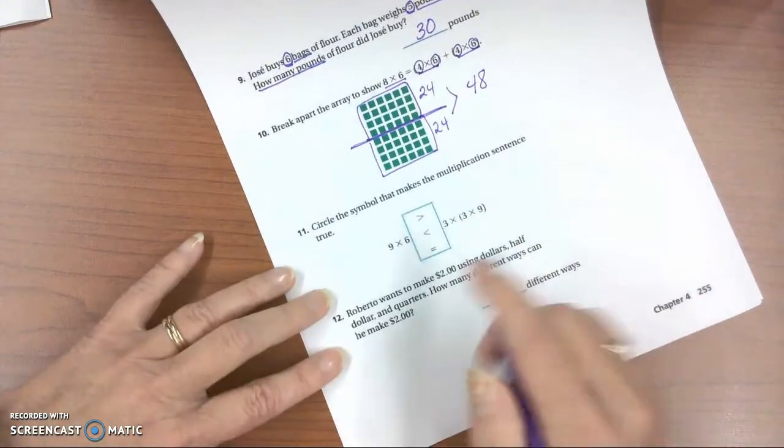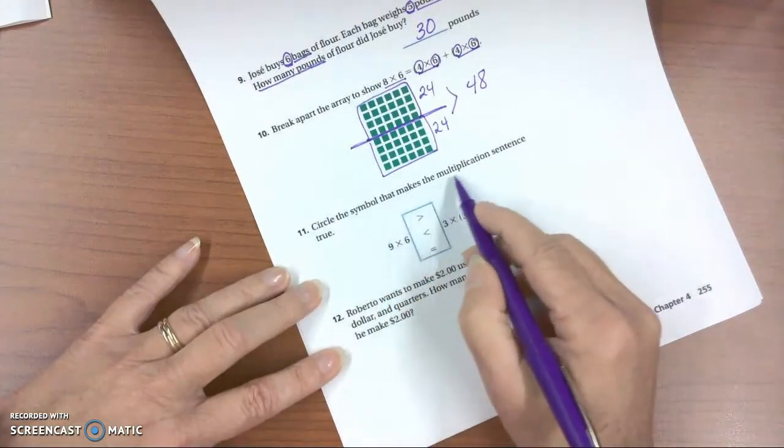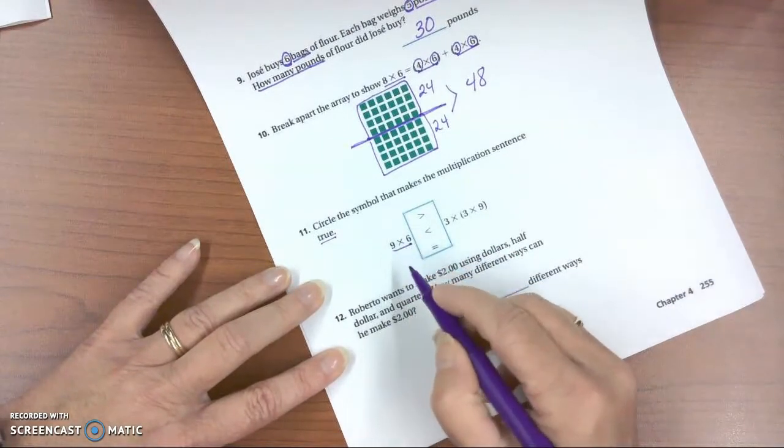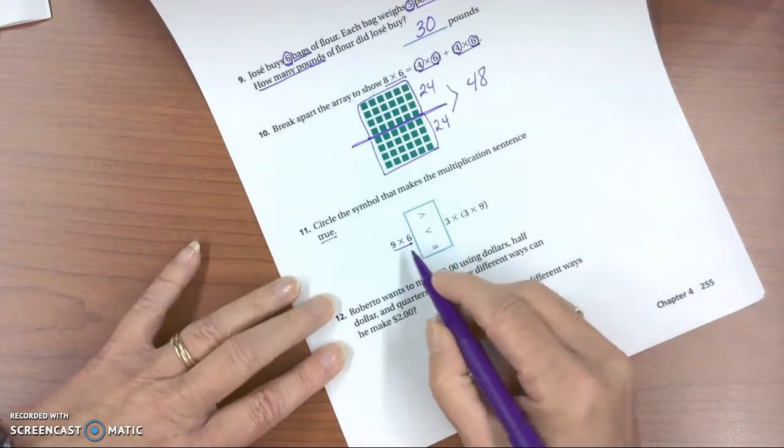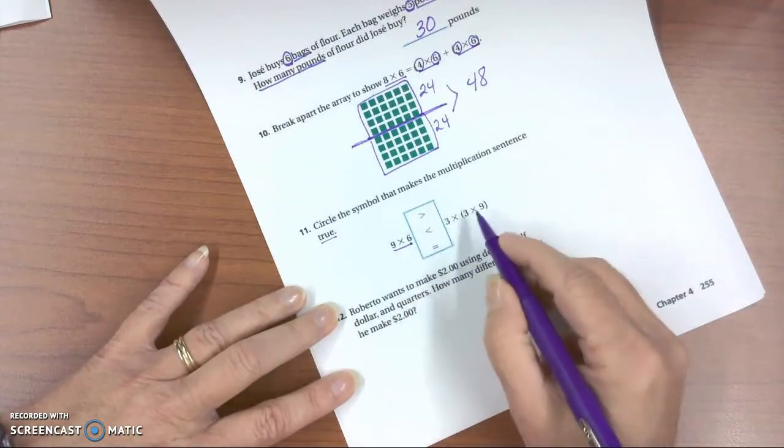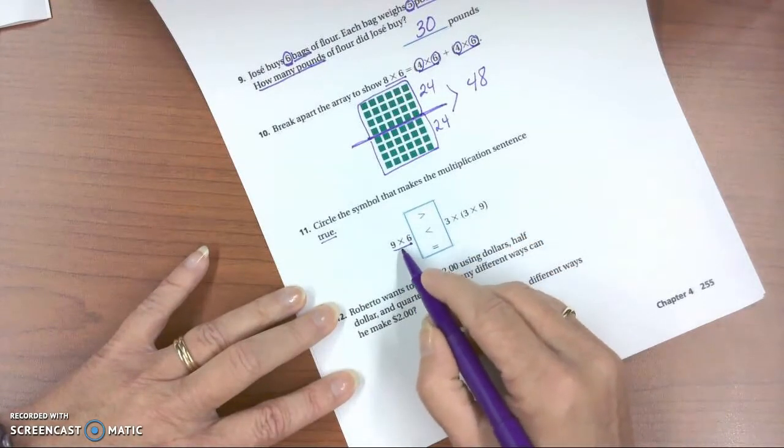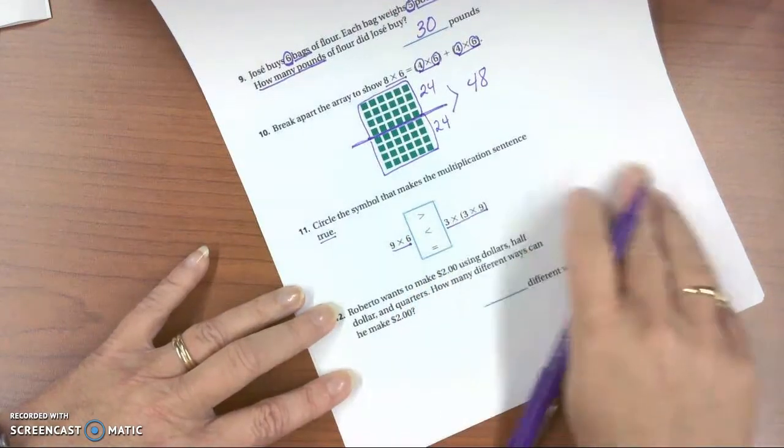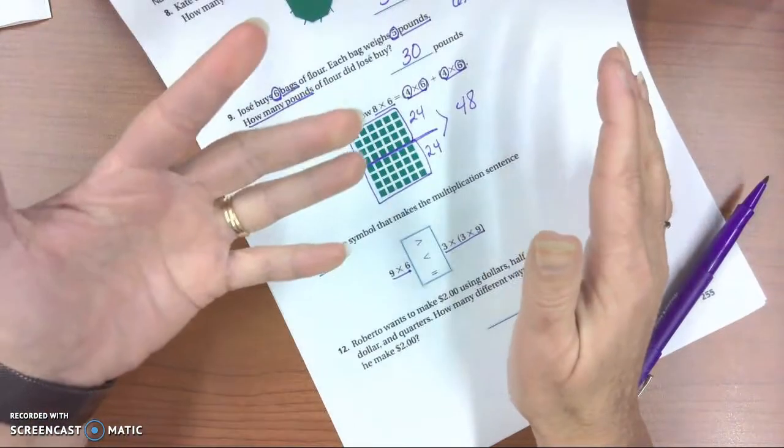The next problem says circle the symbol that makes the multiplication sentence true. So we have 9 times 6. So when you have problems like this, boys and girls, you need to work both sides. Find the answer to this expression. Find the answer to this expression. So 9 times 6,